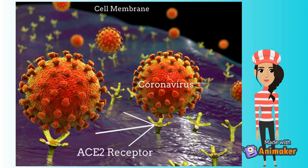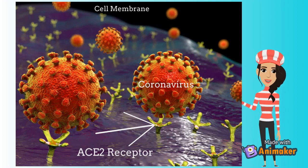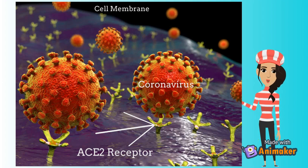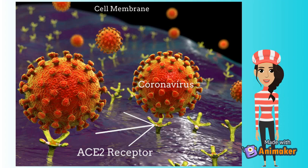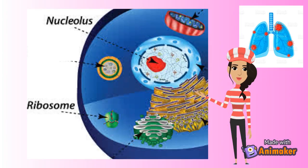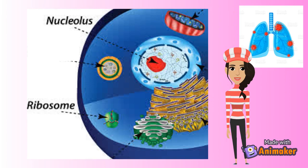The virus cannot enter through the cell membrane directly, as the cell membrane only lets certain substances enter. The things that are needed to enter go through cell receptors known as ACE2 receptors. The virus's spike protein gets attached to these receptors and gets inside — therefore, the virus is able to enter our cells. The virus enters the lungs because the tissues and cells of the lungs are sensitive.